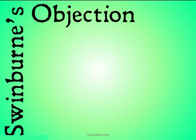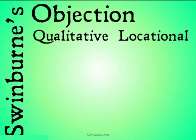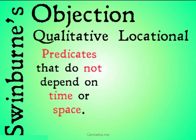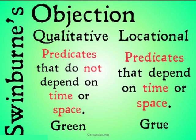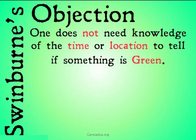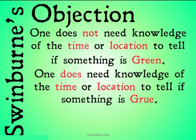Swinburne's objection goes as follows. He distinguishes instead between qualitative and locational predicates. A qualitative predicate is defined as a predicate that does not depend on time or space, whereas a locational predicate is defined as a predicate that does depend on time or space. The clear examples being: green is a predicate that doesn't depend on time or space, whereas grue is a predicate that does in some way depend on time or space, because it seems to have different properties on either side of time t. Basically, one does not need knowledge of the time or location to tell if something is green, whereas one does need knowledge of the time or location to tell if something is grue.